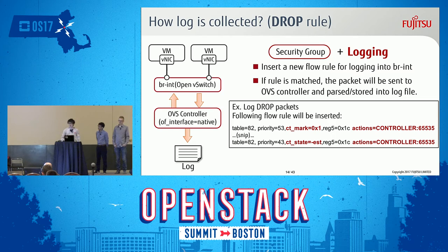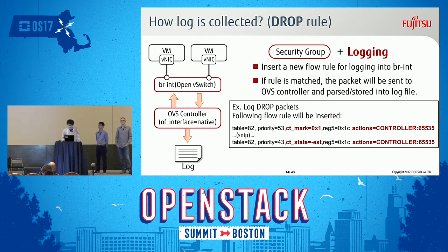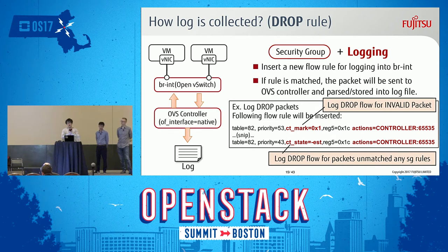On the other hand, for a drop rule, the approach is the same. The following rules will be inserted: first is the ct_mark=0x1 rule, and the other rule is ct_state=EST. Two rules are inserted. The first rule is the log drop flow for invalid packets, and the next is the log drop flow for packets that don't match any security group rules. As a result, dropped packets will be captured and sent to the OpenFlow controller.